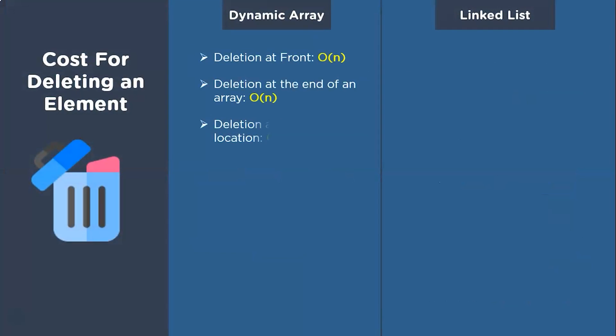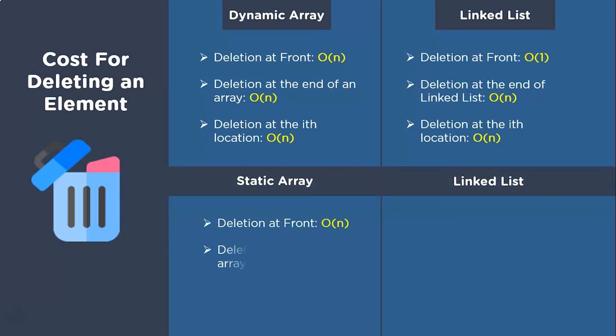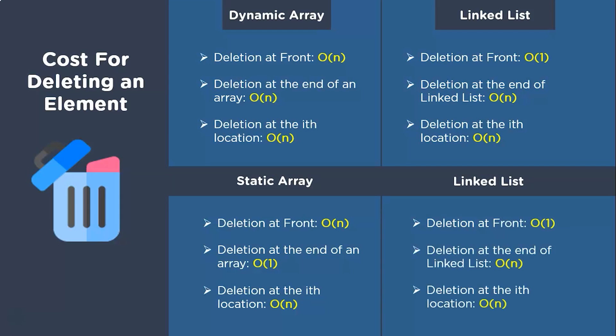The next parameter that we will talk about is deletion in the case of dynamic array and linked list. The complexity for deletion at front and the ith index costs us O(n), whereas the complexity for deletion at the end of the dynamic array remains mysterious. By that, what I mean is the complexity for insertion in a dynamic list is dependent on the programming paradigm. For example, it is O(n) for Java and O(1) for C and C++, whereas there is no such confusion for linked lists, even though it is also a dynamic data structure. The time complexity of deletion at the start of a linked list is O(1), whereas it is O(n) in the other two instances. Now, let's also discuss deletion in a static array. For static arrays, the deletion at the end costs us O(1) and in contrast to that, the other two scenarios cost us O(n) due to the swapping activity that we have discussed earlier.